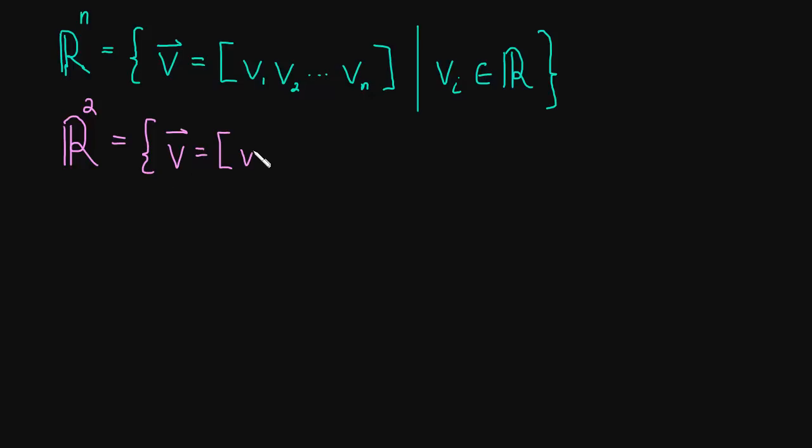So just two components, v_1, v_2. And I'll just leave off the part where they're real. We know that they're real numbers. So does that make any sense? Well, let's think about it.